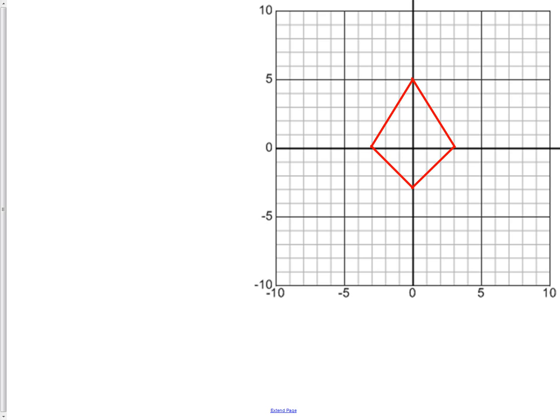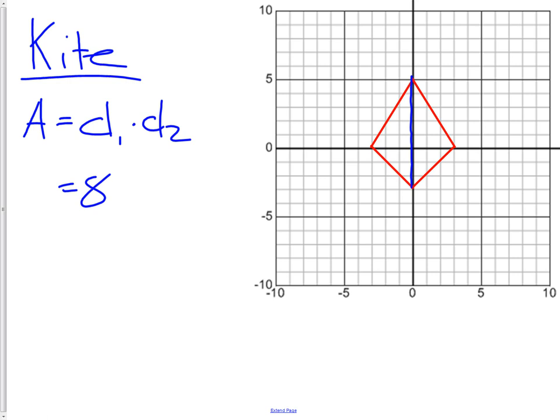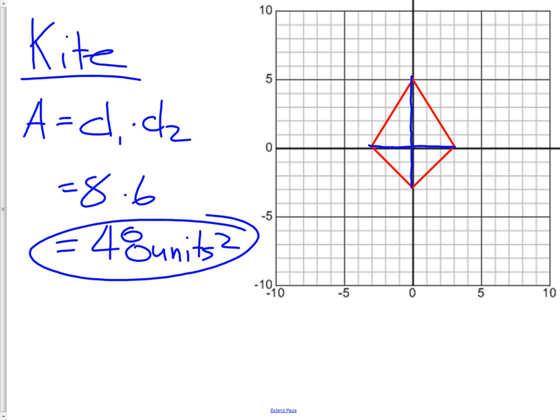What kind of a shape is this? Hopefully you're able to identify this as being a kite. The area of the kite, if you remember, is diagonal 1 times diagonal 2. That we can just count off. So diagonal 1 would be 1, 2, 3, 4, 5, 6, 7, 8. So 8 times diagonal 2, which would be 1, 2, 3, 4, 5, 6. The area of this kite therefore would be 48 units squared. Not too hard if you know the formulas.